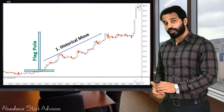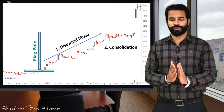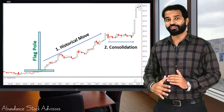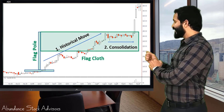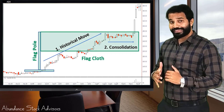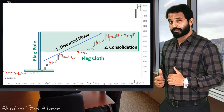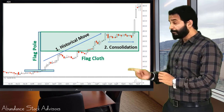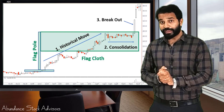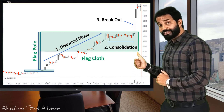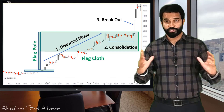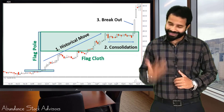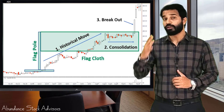The second element is the consolidation phase, where the stock was moving sideways — it neither goes up nor goes down. From the consolidation phase we get the cloth of the flag. Investors actually lose interest in this phase. Can you see the flag now? The third element is a breakout. A breakout is seen as a big candle on the chart and signals the end of the consolidation phase. It's an indication that investors have returned to this stock and have started buying it heavily in good volumes.